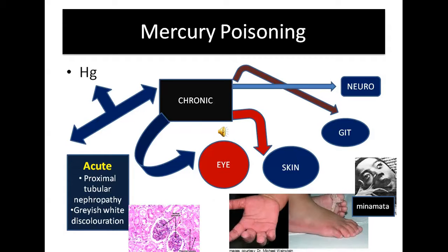One important syndrome to remember — which has not been frequently asked but could be a future question — is Hunter-Russell syndrome, seen in cases of methyl mercury poisoning. Manifestations include visual field constriction, speech and hearing defects, paresthesia, and ataxia. Historically, this was seen in Minamata island in Japan, where 265 lives were lost, and the disease is known as Minamata disease.